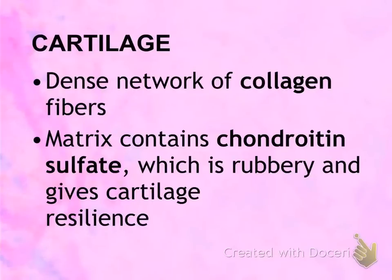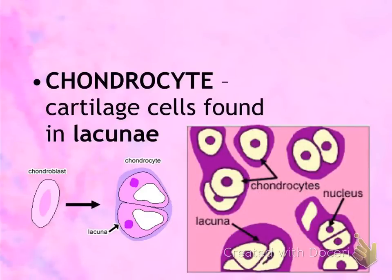The next type of tissue we're going to talk about is cartilage. Like bone tissue, it contains collagen fibers, but unlike bone tissue, it contains chondroitin sulfate as its extracellular matrix, which gives it more of a rubbery consistency, making it a lot more flexible than bone tissue. Cartilage cells are called chondrocytes, and like bone tissue, the chondrocytes are housed in structures called lacunae.